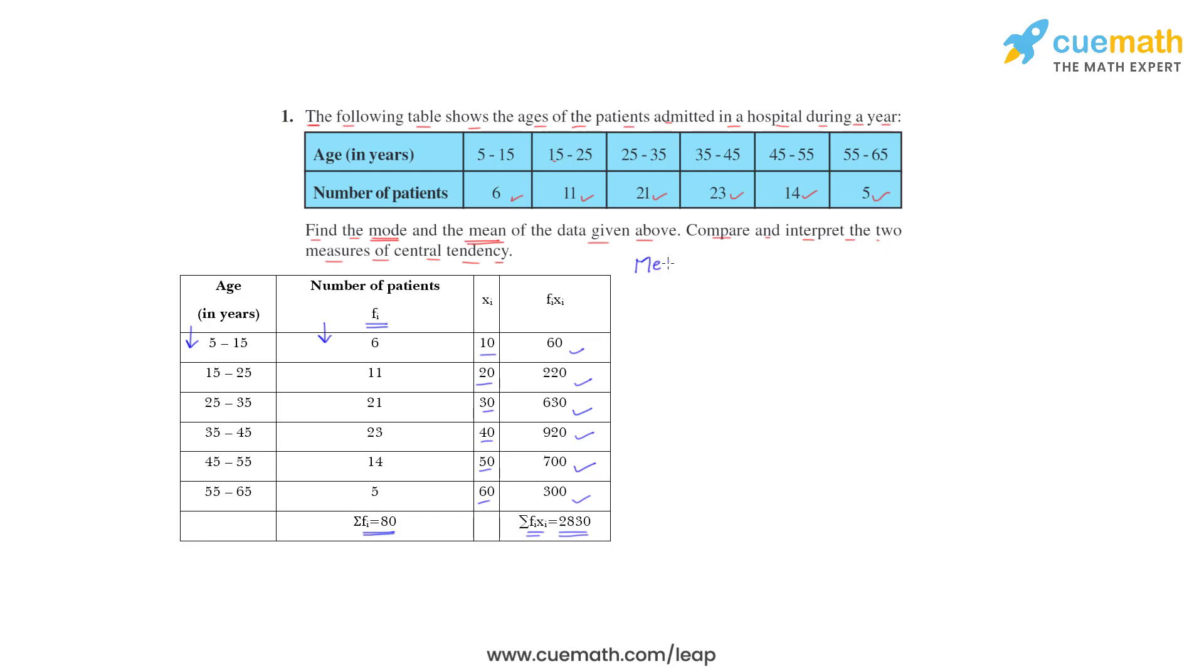Let's find the mean now. So we can use the direct method here. Mean is equal to sigma FiXi. We denote it by X bar, and it is equal to sigma FiXi upon sigma Fi. So sigma FiXi is 2830 and sigma Fi is 80. So this comes out to be 35.37. So mean is 35.37.